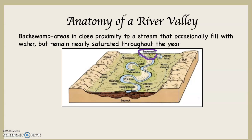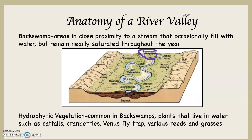A back swamp or back swamps are areas in close proximity to a stream that occasionally fill with water, but they remain nearly saturated throughout the year. You can see I circled what this diagram is showing as a back swamp in purple at the top of the diagram. Back swamps typically have hydrophytic vegetation — hydro means water, and phytic is a Greek word for vegetative life. This is common in back swamps. These are plants that live in water, such as cattails.